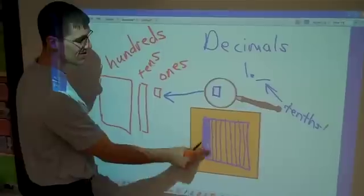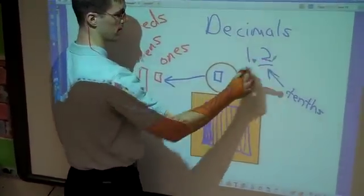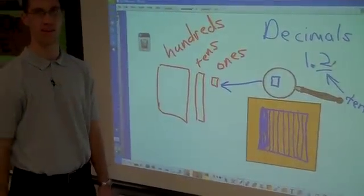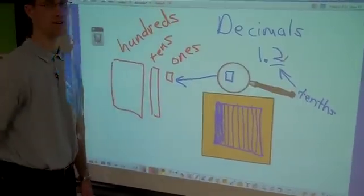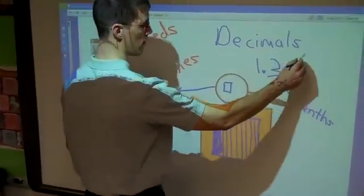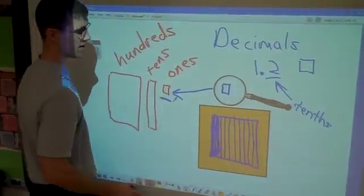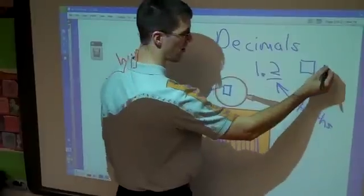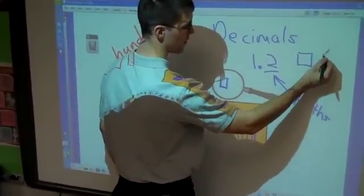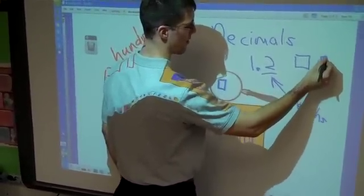So if we had two tenths, I would show that by writing a two in the tenths place. So right now my number that I have here is saying that I have one of the ones and two parts of one of these little guys. So I can almost think of about that much of the one.